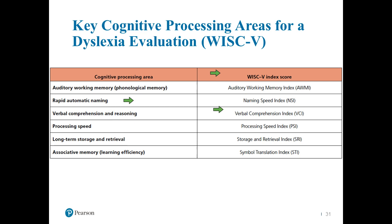It's important to think about each of these areas, but you also have to take into consideration the child you're evaluating — you may not look at each area specifically. But think about those three key areas that IDA suggests we incorporate into every evaluation: auditory working memory, rapid automatic naming, and phonological processing. Those are important key components to your assessment process.